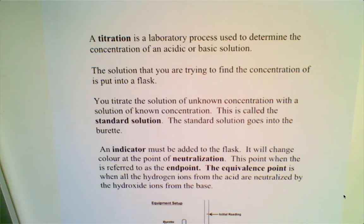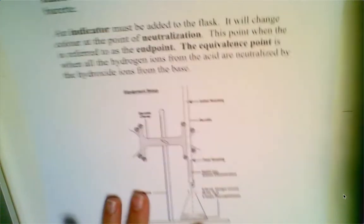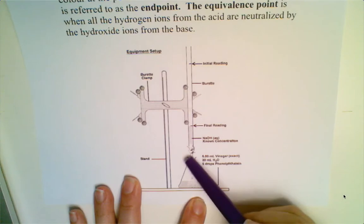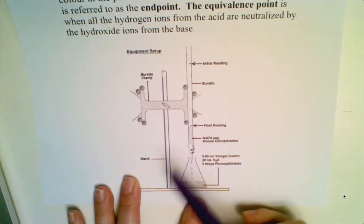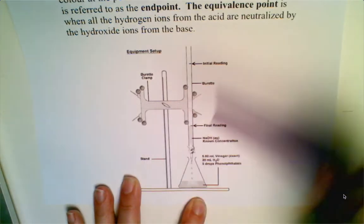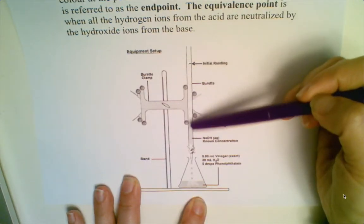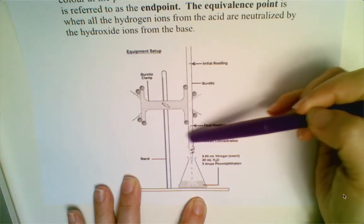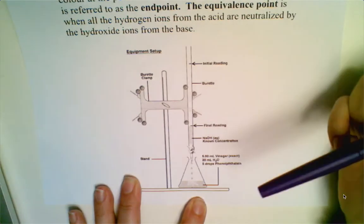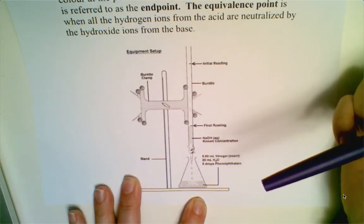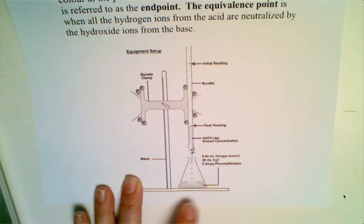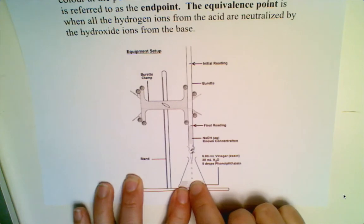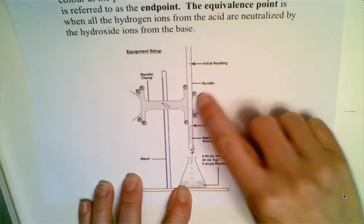In order to figure out the concentration of an acid or a base, you have to use a setup that includes a retort stand with a burette clamp. The burette clamp holds this long calibrated glassware called a burette, which usually holds about 50 milliliters. If you were trying to find the concentration of acid in vinegar, the acid would go in the flask and the base would go into the burette.